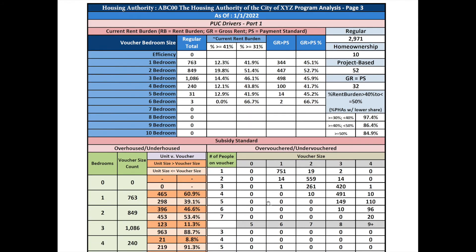Under the Over-Vouchered, Under-Vouchered section of the page, the table displays the number of people on a voucher and the family voucher size. In this case, 751 households of one person have a one-bedroom voucher size. Two households of one person each have a three-bedroom voucher, a potential indication of an inappropriate voucher size that a PHA should examine.